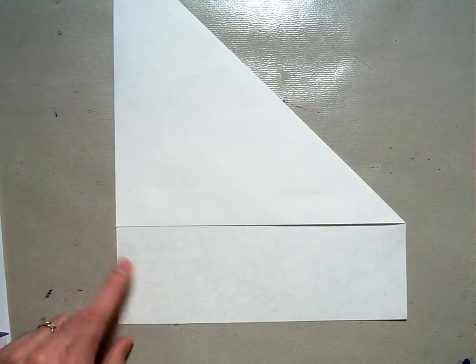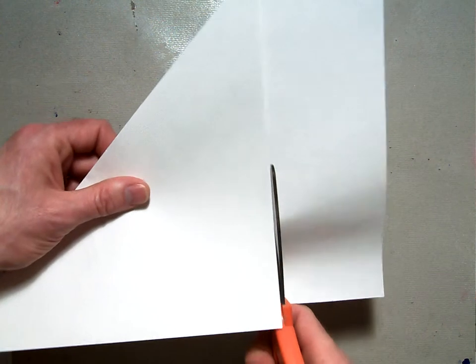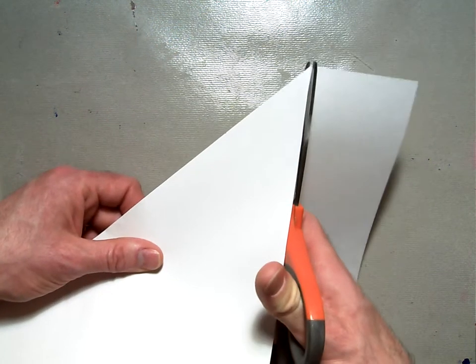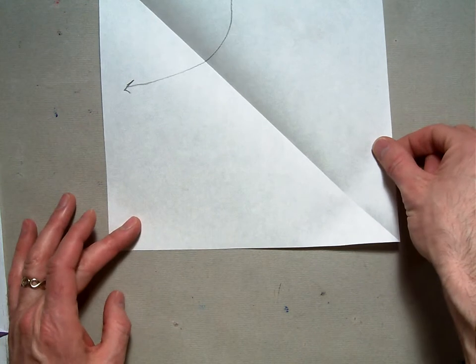Once you have that crease completed, cut the bottom off like this. Now, you have a nice triangle, a nice large right triangle. And when you open it up, you'll have a square.